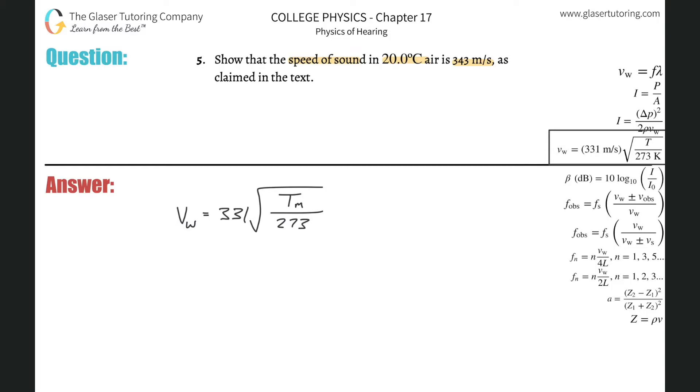So essentially, if you notice, there's only two variables in this formula: the speed of a sound wave, V, and temperature, the measured temperature. So as you can see, it's a direct relationship. Not proportional because this is under the square root. But as temperature goes up, we notice that the velocity will also go up. If the temperature goes down, the velocity will go down.